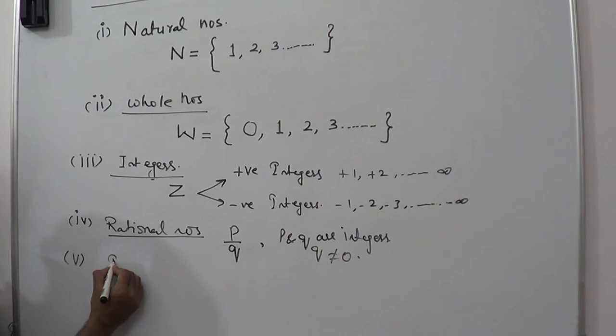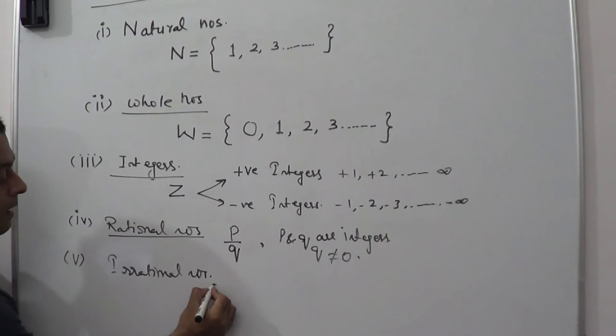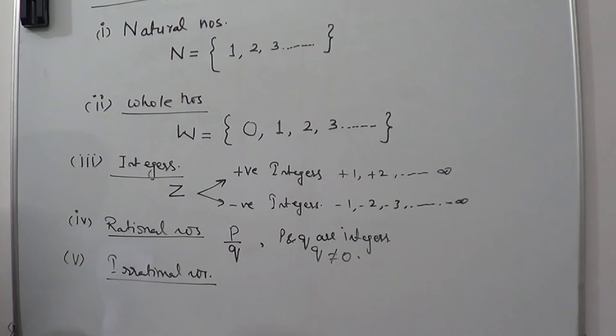However, another category of numbers will be irrational numbers. Irrational numbers are those numbers whose decimal solution is not terminating.